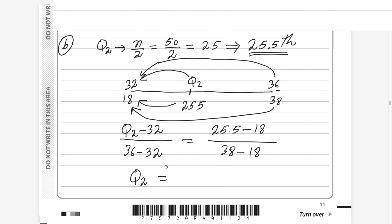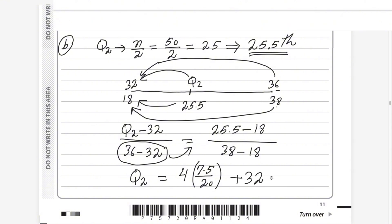From here we get the value of Q2. Solving: the numerator is 7.5 and the denominator is 20. This value multiplies the class width of 4 and is added to 32. Using a calculator, we get Q2 equals 33.5. So 33.5 is the median of these values.